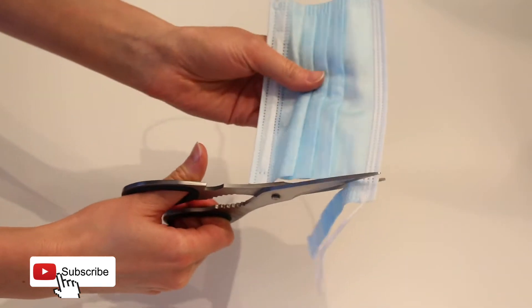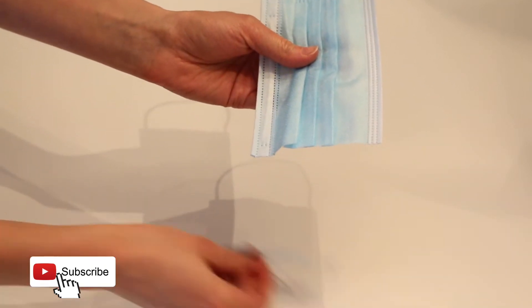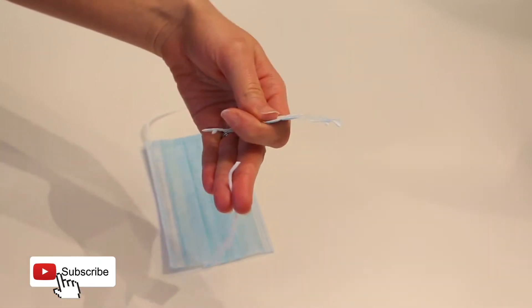First, start by cutting off one end of the face mask. With the end that you just cut off, snip off the ear loops. We'll need this elastic band for later.